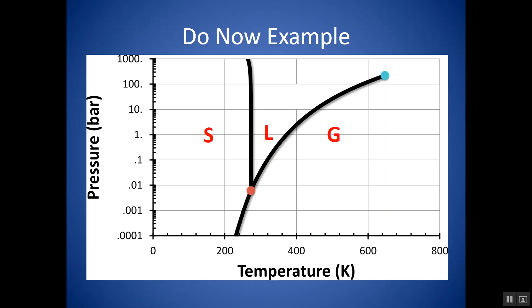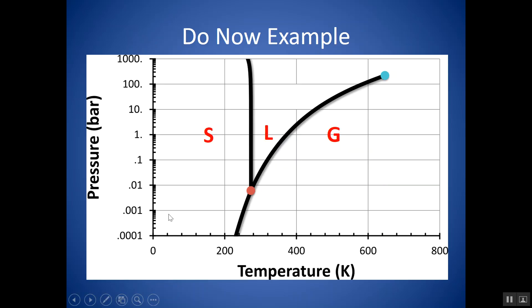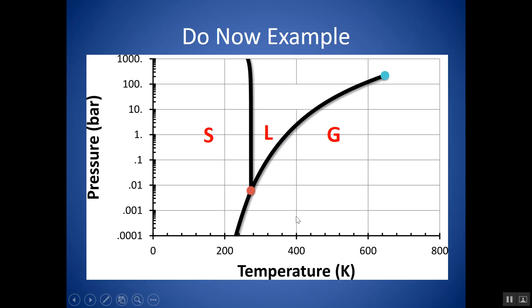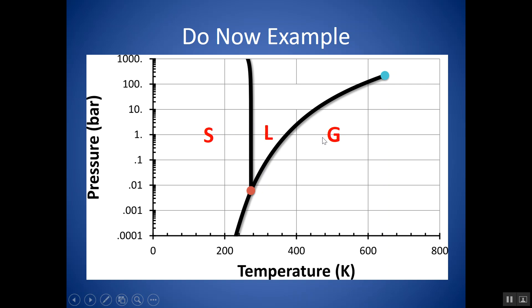What is the boiling point at 1 bar? Go to the line between liquid and gas at 1 bar, and drop down — I'd estimate about 360 Kelvin. What is the sublimation point at 0.001 bar? The sublimation point is between solid and gas. Drop down at 0.001 bar, and I'd estimate about 230 Kelvin. What's the phase at 400 K and 100 bar? At 400 K and 100 bar, we're in the liquid zone — so it's important to label the phases first, as that should always be your first step.